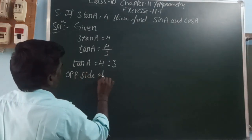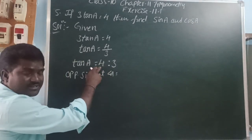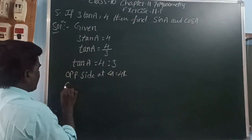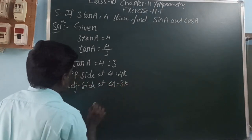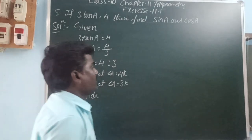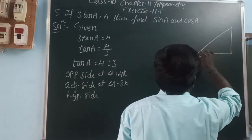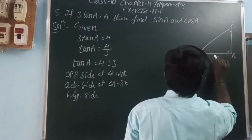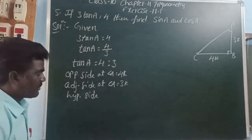So the opposite side at angle A is 4k and the adjacent side is 3k, where k is a common factor. So we have the opposite side as 4k and adjacent side as 3k. We can find the hypotenuse by using Pythagoras theorem. So we have triangle ABC: opposite side is 4k and adjacent side is 3k.